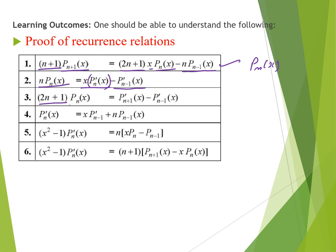The third recurrence relation is: (2n+1) P_n(x) = P_{n+1}'(x) minus P_{n-1}'(x). The fourth is: P_n'(x) = x P_{n-1}'(x) + n P_{n-1}(x). The fifth is: (x²-1) P_n'(x) = n x P_n(x) minus n P_{n-1}(x). The sixth is: (x²-1) P_n'(x) = (n+1) P_{n+1}(x) minus x P_n(x).